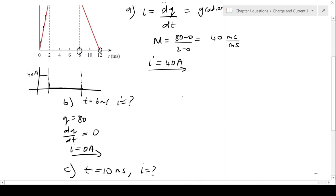If we return to the graph, from 0 to 2 milliseconds the current is 40 amps, from 2 to 8 milliseconds it's 0 amps, and from 8 to 12 milliseconds the current is -20 amps.